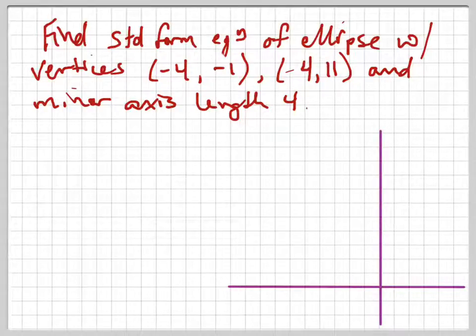They want us to find the standard form equation of an ellipse with vertices at negative 4, negative 1, so there's one vertex, and negative 4, positive 11.